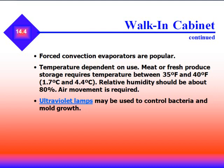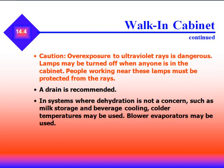Ultraviolet lights can be used to control bacteria and mold growth in walk-in cabinets. Be very careful working around ultraviolet light because overexposure to UV rays is dangerous. Lamps should be turned off when anyone is in the cabinet, and people working near the lamps must be protected from the rays. Walk-in cabinets should have a drain to get rid of any moisture or condensate. In systems where dehydration is not a concern, such as milk storage or beverage cooling, colder temperatures can be used and blower evaporators may also be used.